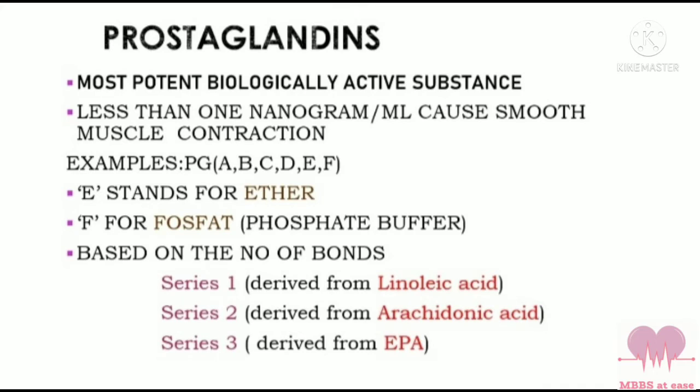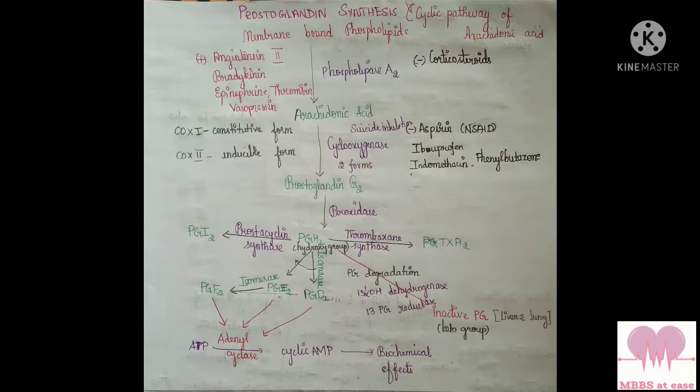Prostaglandins are not stored as such; the precursor fatty acids are stored in the membrane as phospholipids. The arachidonic acid is released by the action of phospholipase A2 on phospholipids. This is promoted by thrombin, epinephrine, and bradykinin.